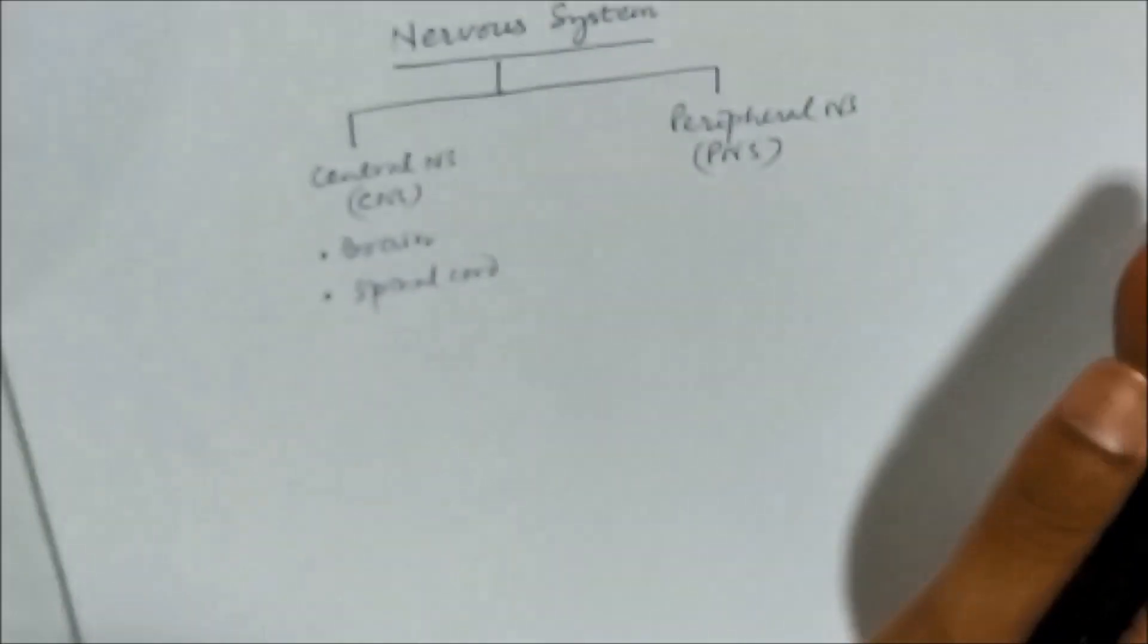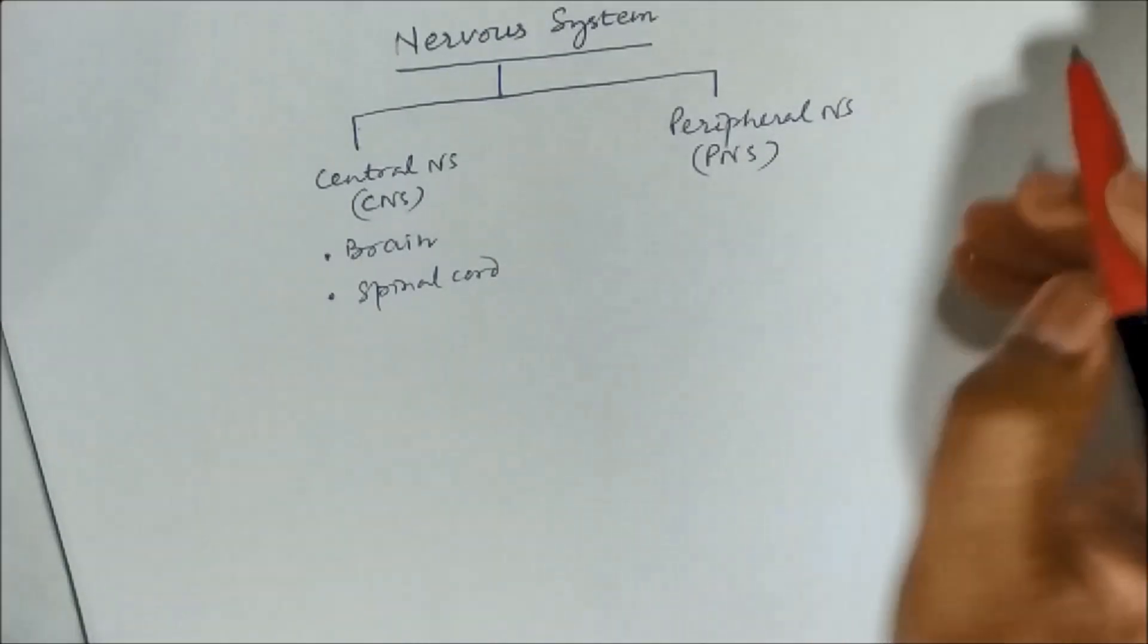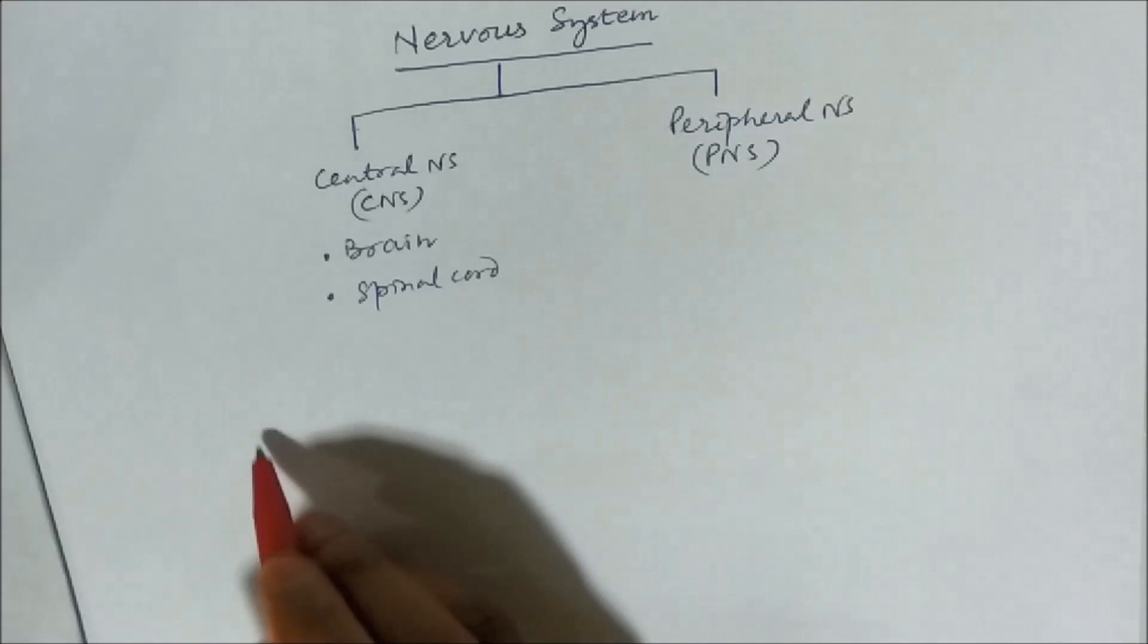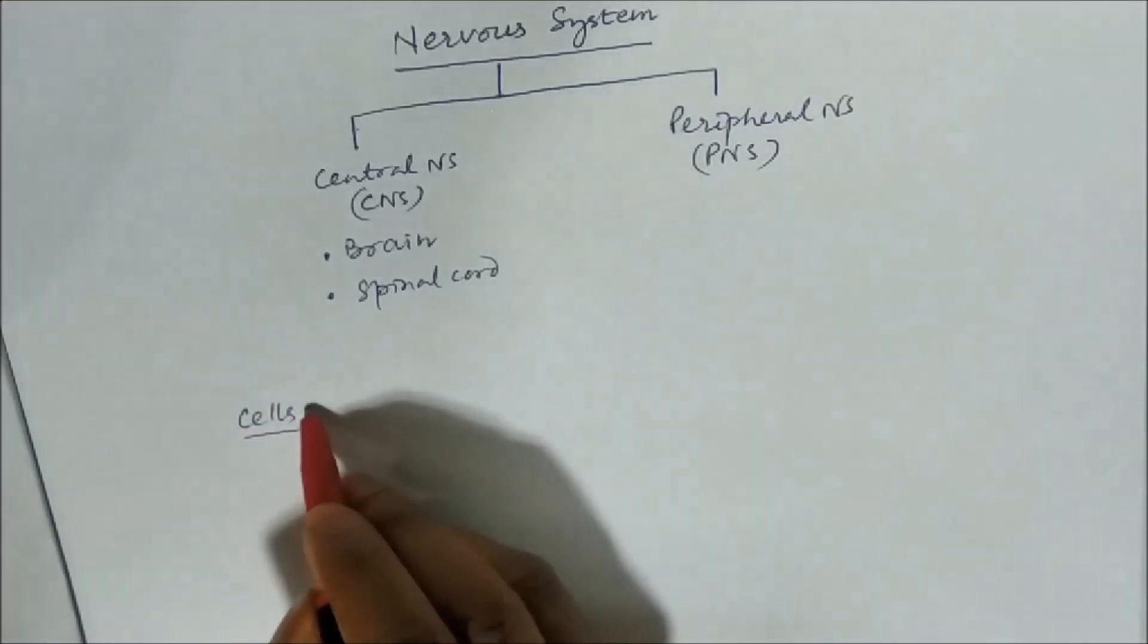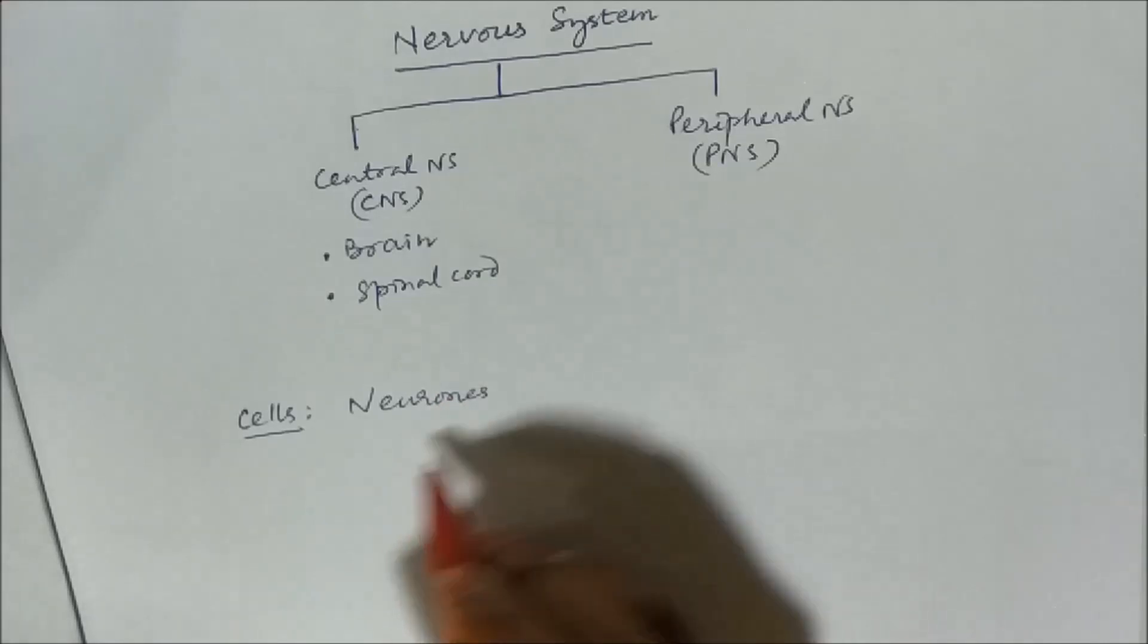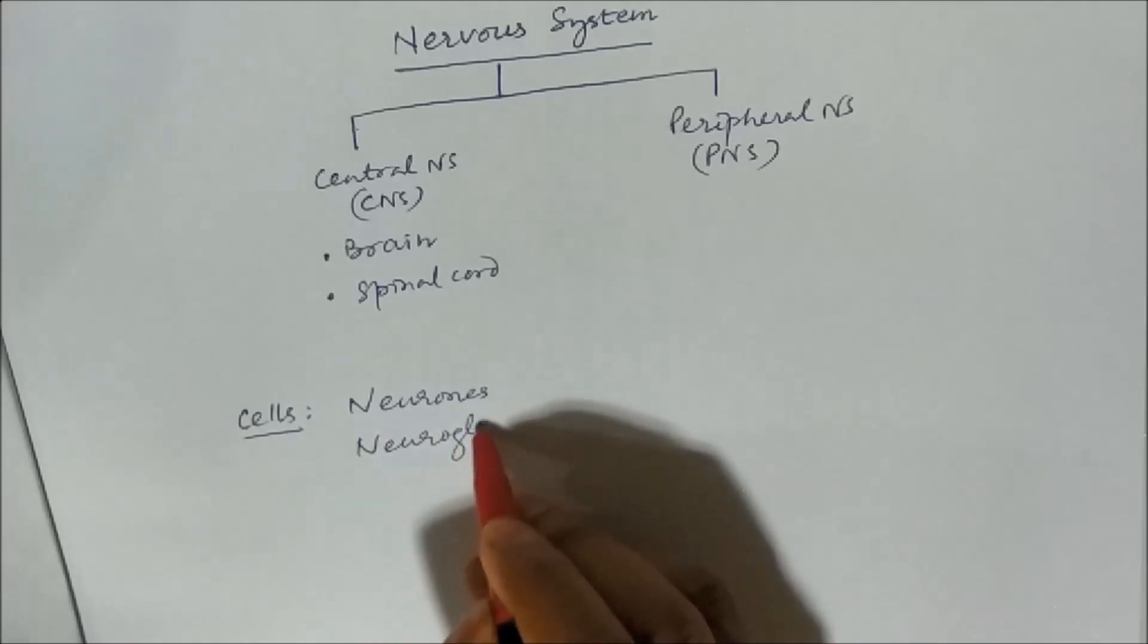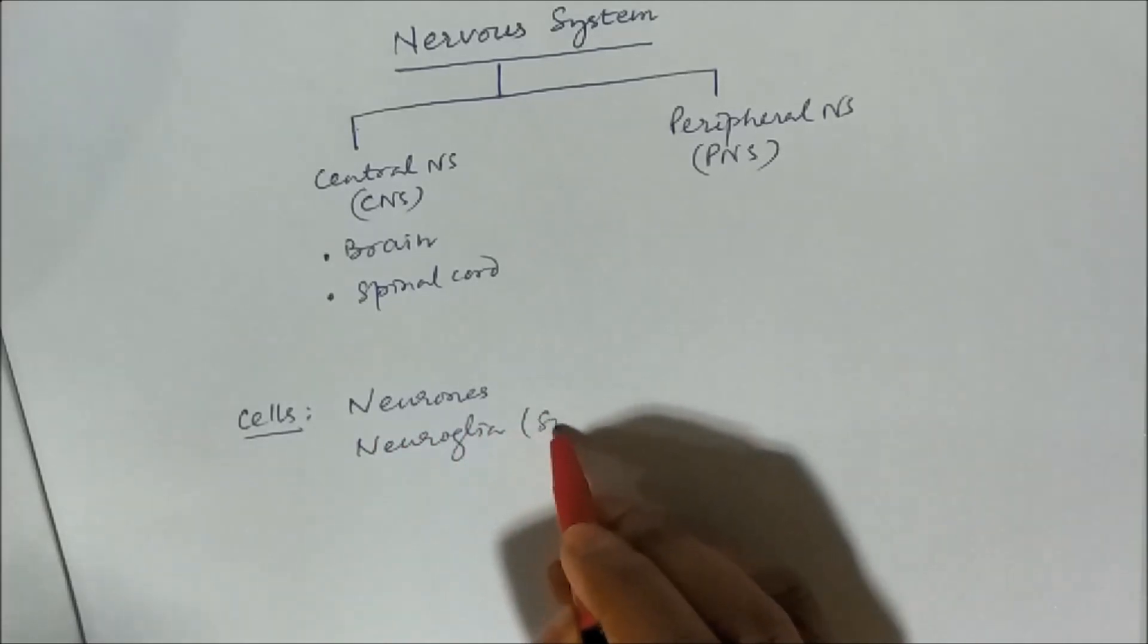And the periphery, that means the cells. The cells of the Nervous System are the neurons which is the functional cell, main cell and Neuroglia which is the supporting cell.